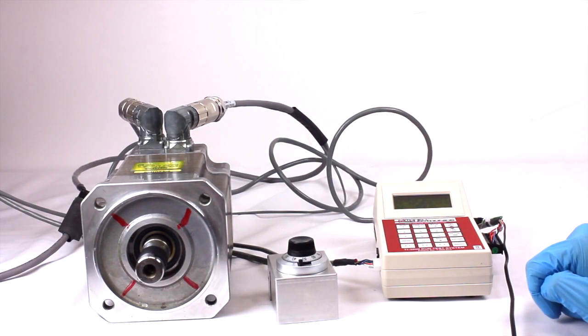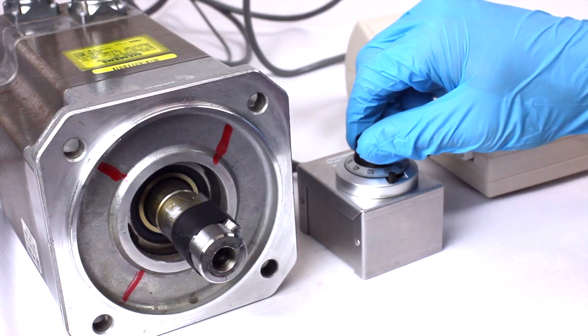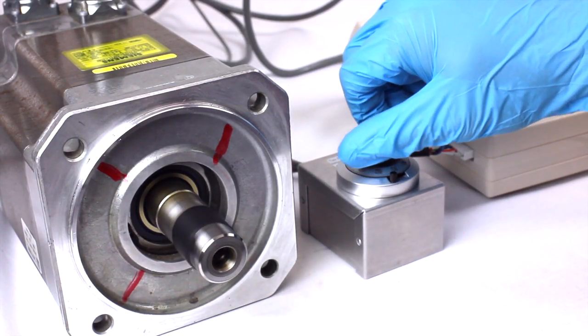Turn the potentiometer clockwise and the motor will turn in the forward direction. For Siemens motors, this is also clockwise.